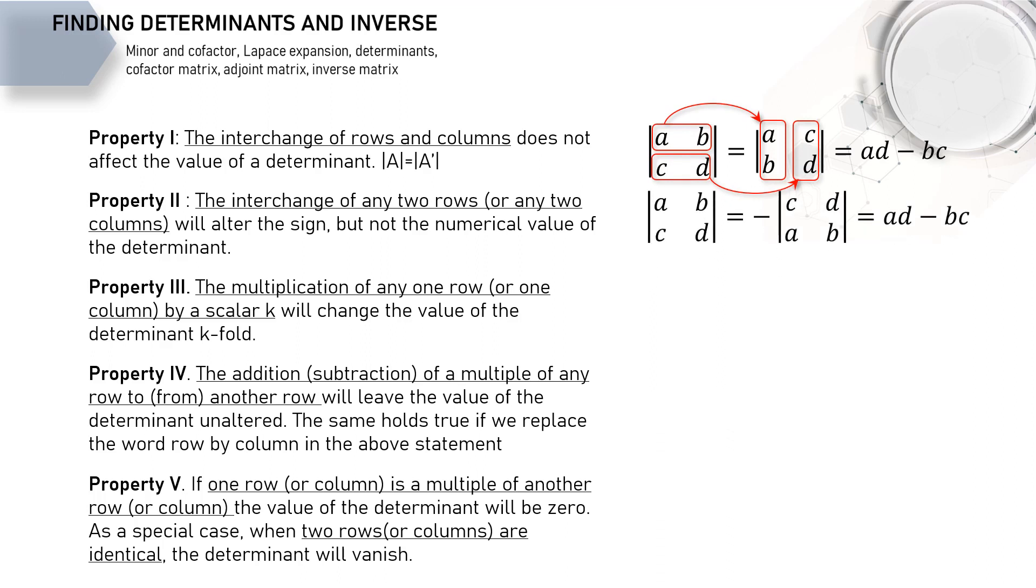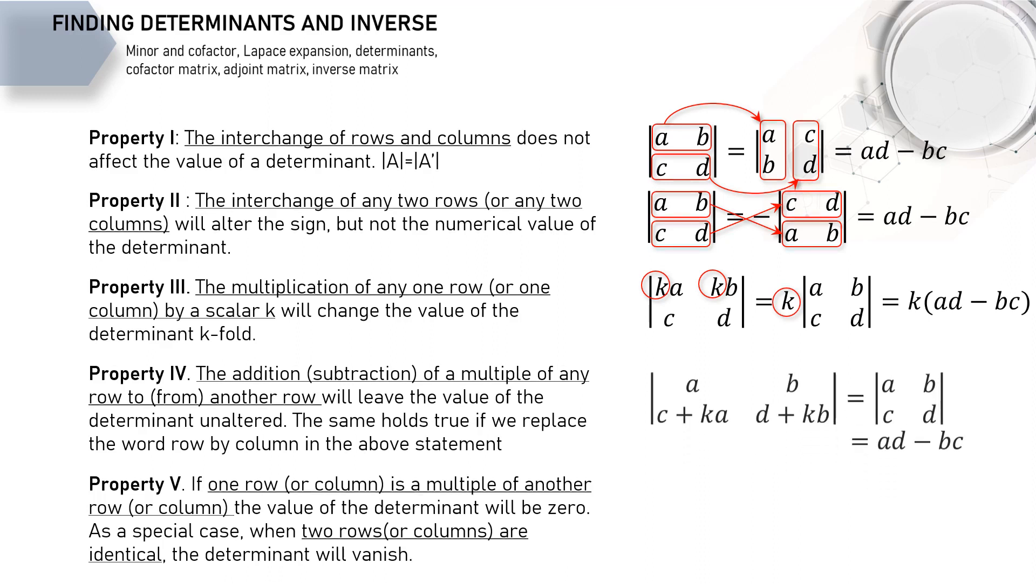The third property is something like this. Multiplying the row with this scalar number. This scalar number will yield the same determinant as multiplying the whole determinant with this scalar number. The example of the fourth property can be expressed like this. The addition like this doesn't affect the value of the determinant. As for the fifth property, both conditions can be expressed like this. Having identical rows or row, that is just the scalar multiplication of another row, will result in zero determinant.